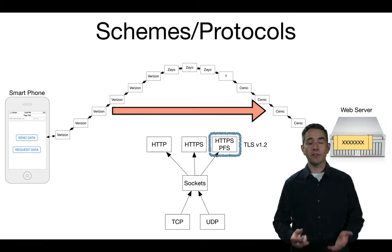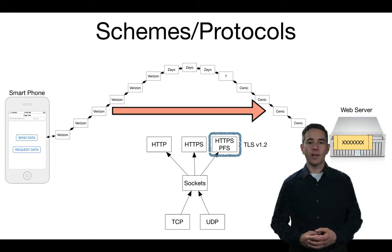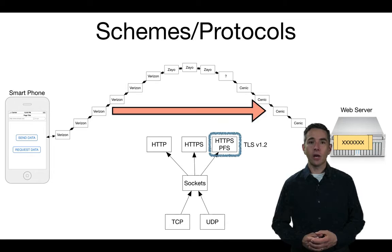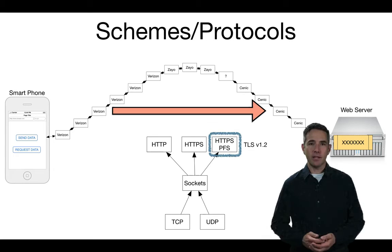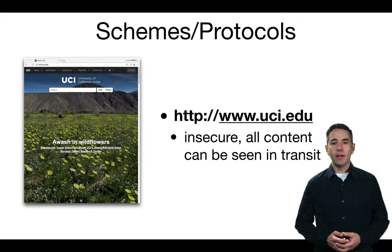HTTP, HTTPS, and HTTPS with perfect forward secrecy all rely on an underlying mechanism called sockets, which is the level at which the path is created from one side to the other. You may also come across the terms TCP and UDP — these are lower-level mechanisms for forming the path and moving packets along it, independent of how the information inside them is being stored.